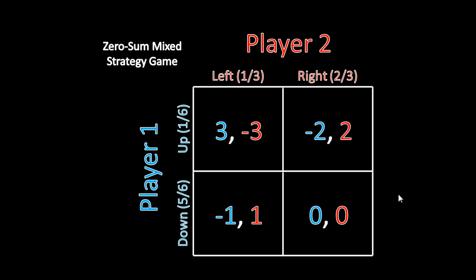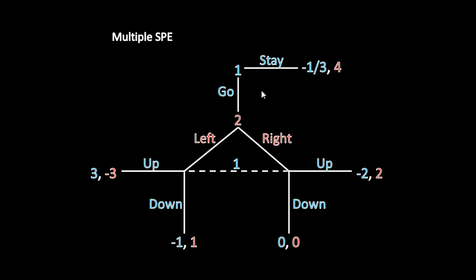The solution to this game is: Player 1 goes up with probability 1/6, down with probability 5/6, and Player 2 goes left with probability 1/3 and right with probability 2/3 — and that's the unique Nash equilibrium of this game. But in order to figure out whether Player 1 should go here, we need to figure out his expected utility for going. We know what Player 2 is going to do — she's going to mix — and we know that Player 1 is going to mix between up and down. But we need to actually measure the quality of this outcome for Player 1 to compare it to how much he's going to earn by staying.